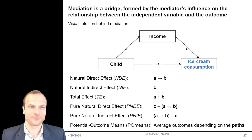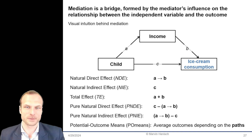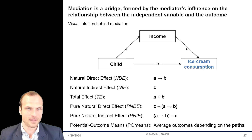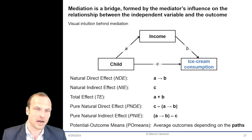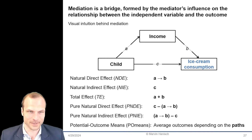Next, we have the natural indirect effect. This is the part of the effect that happens through a specific mediator — like a detour path that the effect takes through another variable to influence the outcome. Then we have the total effect, which is the entire effect of the independent variable on the outcome. It combines both the direct and indirect paths, like all ways you can get from point A to point B.